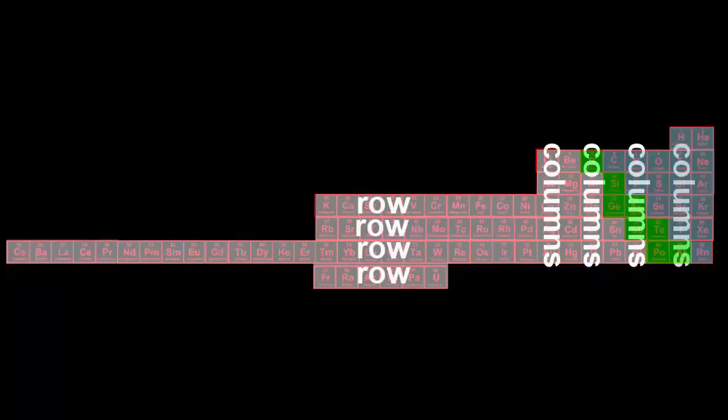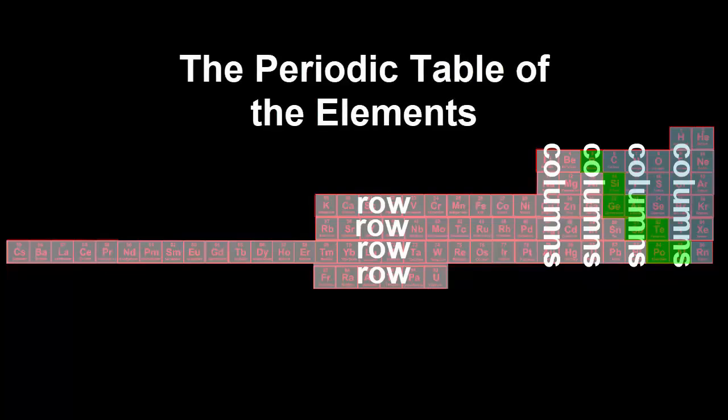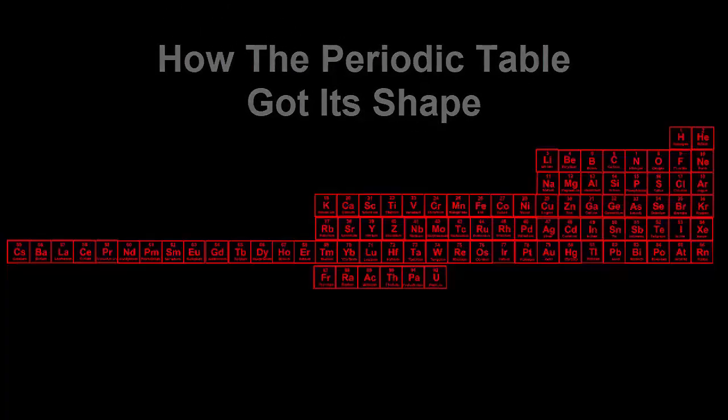Another word for repeating is periodic. Because the arrangement of elements is now in rows and columns, it should also be called a table: the periodic table of the elements.